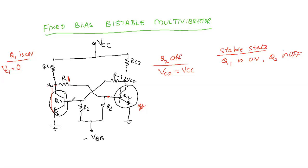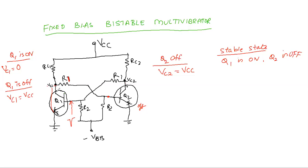Now, if you apply a trigger pulse to the base of Q1 transistor — I am applying a negative-going trigger pulse to Q1 — which is not sufficient for the Q1 transistor, so Q1 will enter into the OFF state. Now Q1 is in OFF condition: the collector and emitter terminals will be open, and all the VCC will appear across the collector terminal. The output voltage is equal to VCC. This VCC voltage at the collector of the first transistor is applied as input to the base of Q2 transistor.